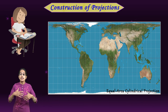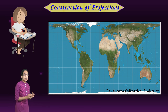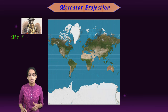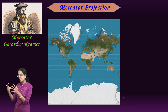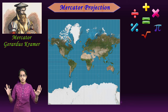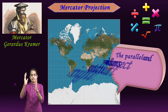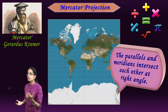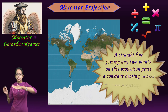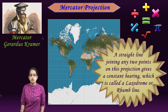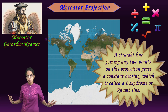We will cover three important projections today. The first is Mercator projection, developed by Kramer, a Dutch scientist who used mathematical formulas to develop it. The idea was that parallels and meridians would intersect one another. A straight line joining any two points with constant bearing is known as the rhumb line or loxodrome.